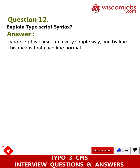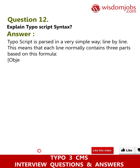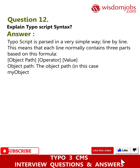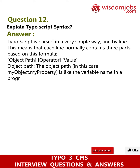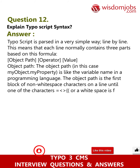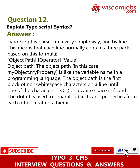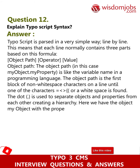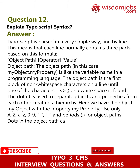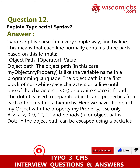Question 12: Explain TypoScript syntax. Answer: TypoScript is parsed in a very simple way, line by line. Each line normally contains three parts based on the formula: object path, operator, value. The object path - in this case 'myObject.myProperty' - is like a variable name in a programming language. The object path is the first block of non-whitespace characters on a line until an equals sign or whitespace is found. The dot is used to separate objects and properties from each other, creating a hierarchy. Use only a-z, A-Z, 0-9, dash, underscore, or periods in object paths. Dots in the object path can be escaped using a backslash.